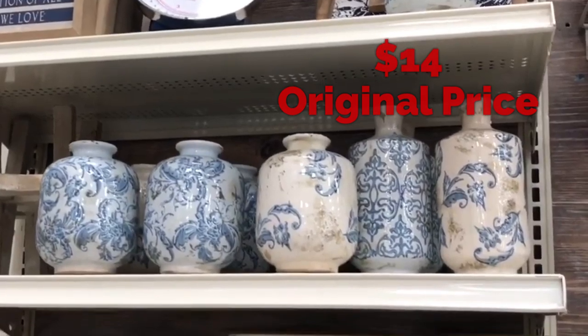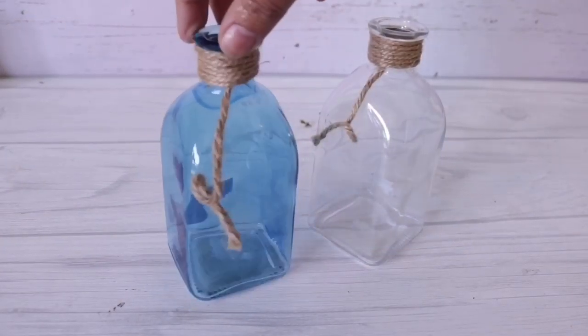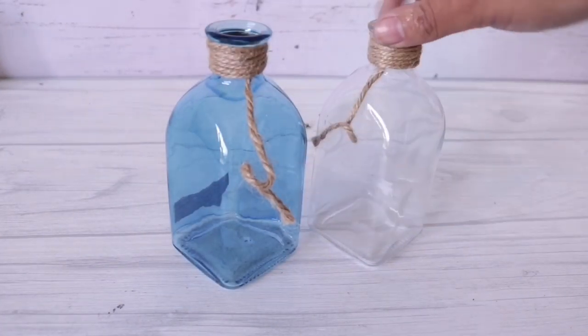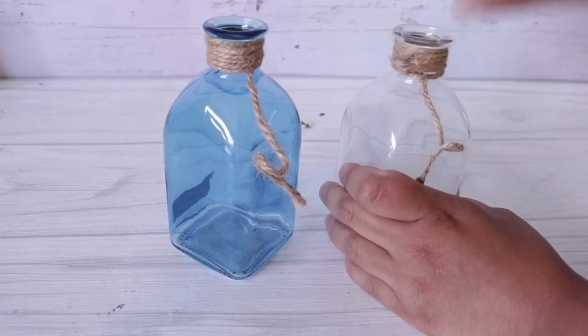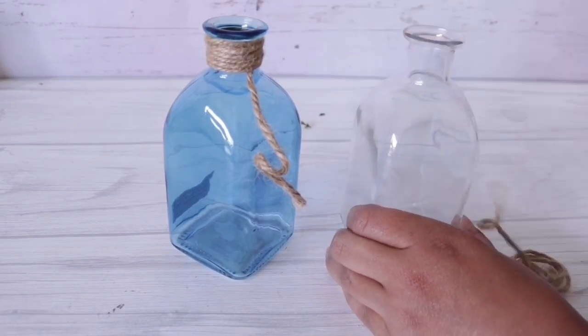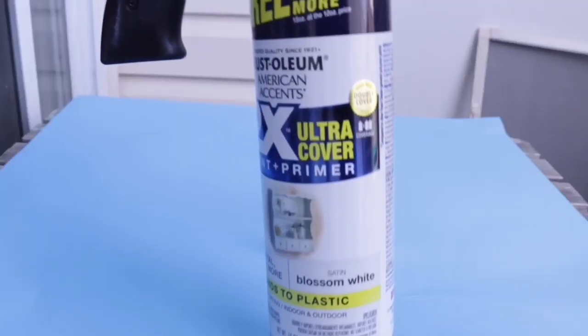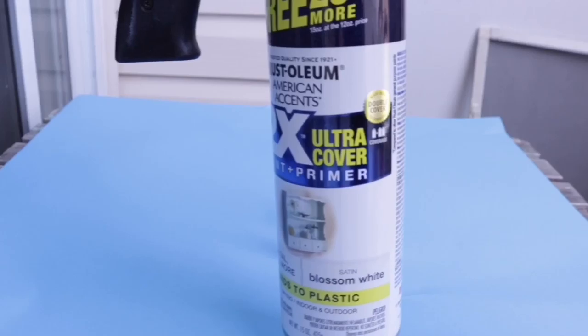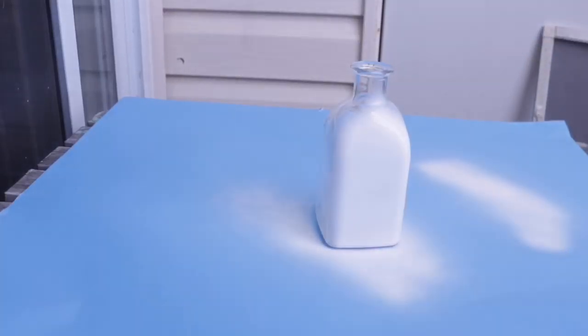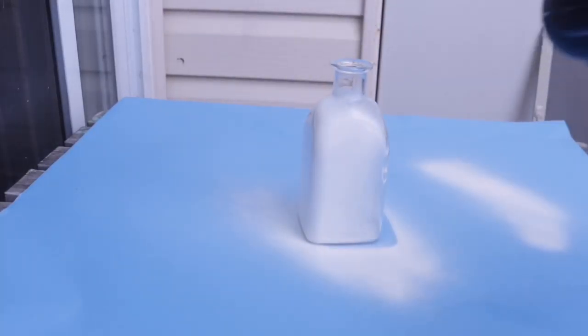The next dupe is this beautiful china pattern vase which was originally $14. I'm going to be using this vase from Dollar Tree, it originally had an anchor on it so I'm going to remove the twine. Then I'm going to take it outside and give it a coat of the same blossom white I used in my previous tutorial.